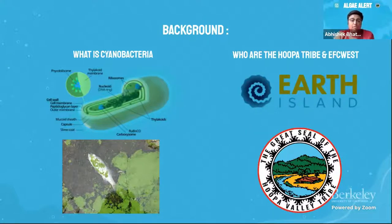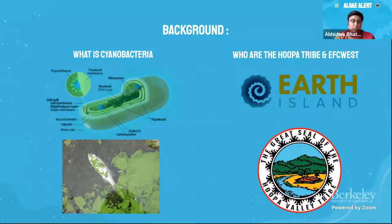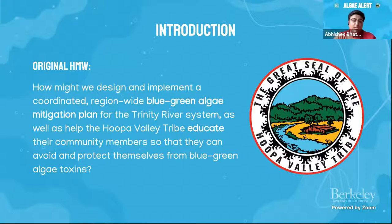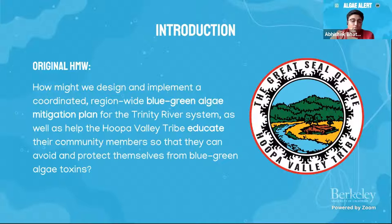Right now, the Trinity River, which runs through the Hupa Valley Reserve, faces the challenge of mitigating these algal blooms as well as cyanotoxins flowing from upstream blooms. We've partnered with the Hupa Valley Tribe and EFC West, members of the larger umbrella group Earth Island, who work with indigenous groups around the globe. Our group was given the task of designing and implementing a coordinated region-wide blue-green algae mitigation plan for the Trinity River system, and helping the Hupa Valley Tribe educate their community members to avoid and protect themselves from blue-green algae toxins.